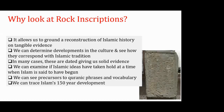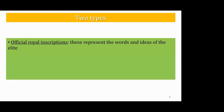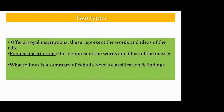Another reason we look at rock inscriptions is we can trace Islam's 150-year development — at least the crucial 150 years. There are two types we'll be looking at: official royal inscriptions, which represent the words and ideas of the elite; and popular inscriptions, which represent the words and ideas of ordinary people. What follows is a summary of Yehuda Neville's classification and findings. We will look at the popular inscriptions first.